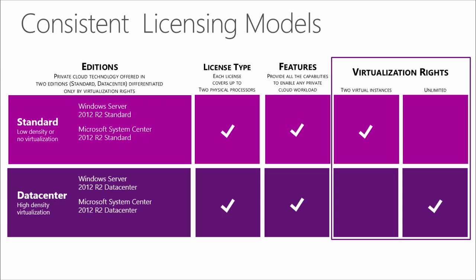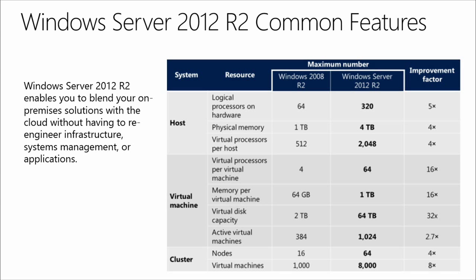The only differentiator between the editions is the virtualization rights. Standard edition provides two virtual instances with each license, and Data Center offers unlimited virtualization with each license. Both Windows Server 2012 R2 Data Center and Standard editions include several improvements to capabilities and licensing, and both benefit from increased processor support, memory, and other features, offering the same premium feature set to both editions.